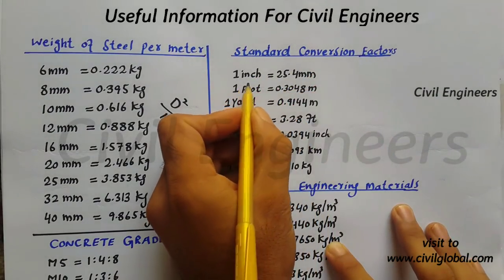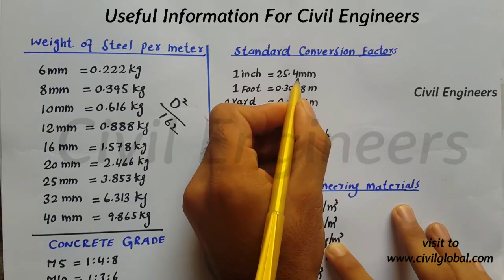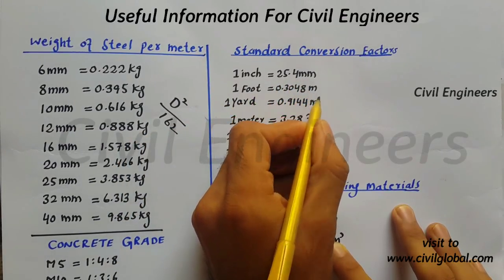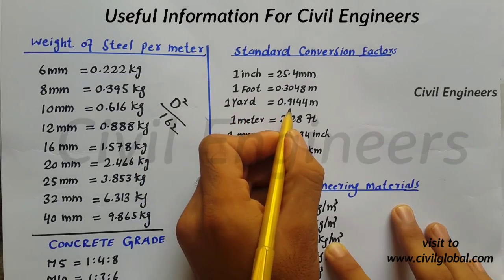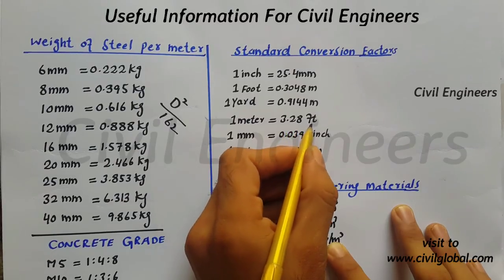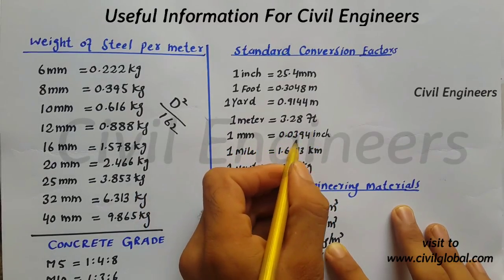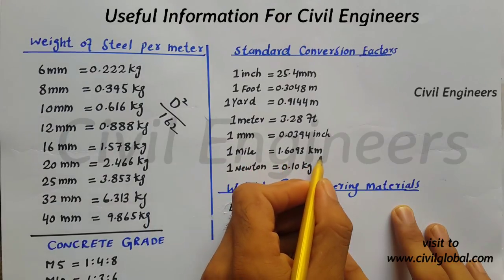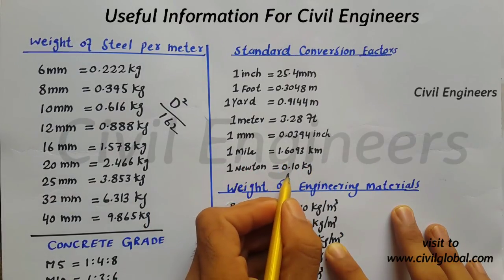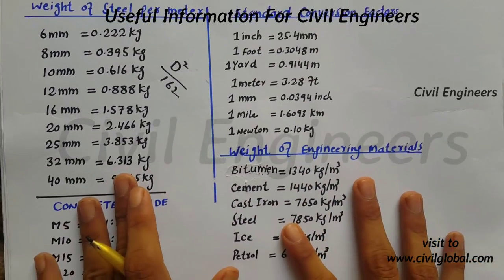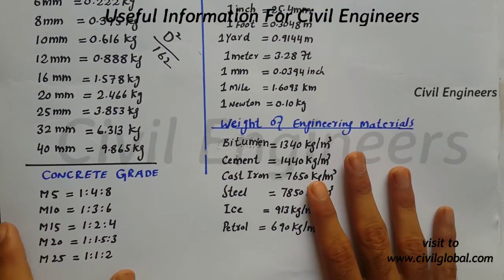Now we have the standard conversion factors: one inch is equal to 25.4 millimeters, one foot is equal to 0.3048 meters, one yard is equal to 0.9144 meters, one meter is equal to 3.28 feet, one millimeter is 0.0394 inches, one mile is equal to 1.6093 kilometers, and one Newton is equal to 0.10 kg.